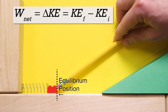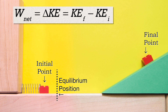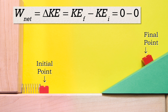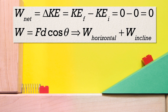Net work equals the change in kinetic energy. We set the initial point where the spring is compressed to its maximum distance, and the final point at the maximum height to which the block moved. The block is not moving at the initial point, so the initial kinetic energy is zero. The block is also not moving at the final point, so the final kinetic energy is also zero. Therefore, the net work equals zero minus zero, which is zero. Because the direction of the displacement of the block changes, we need to split the net work into two parts: the net work on the horizontal frictionless surface and the net work on the incline.